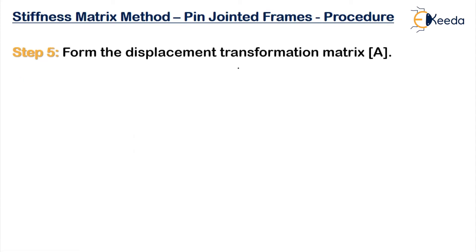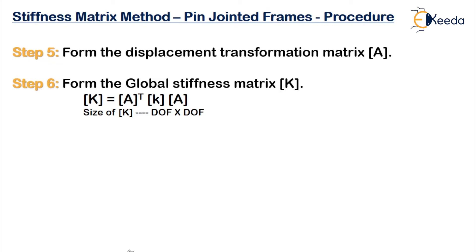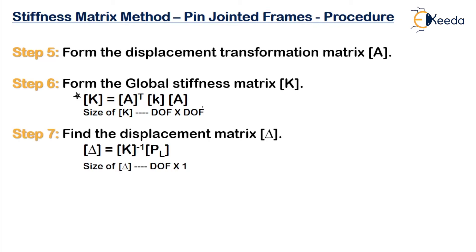Step 5 is to find the displacement transformation matrix. Then step 6 is forming the global stiffness matrix capital K, the same as in beams: K = A-transpose times K times A. The size will be degree of freedom by degree of freedom. Step 7 is to find the displacement matrix delta, which is K-inverse times PL — PL having already been found in step 3.